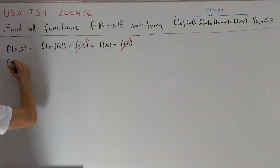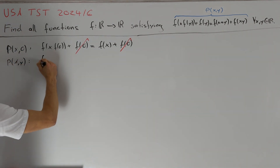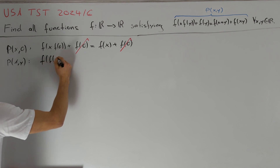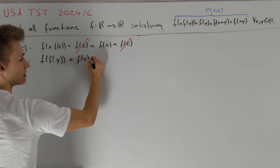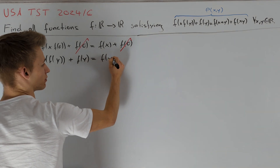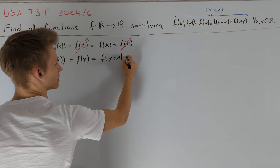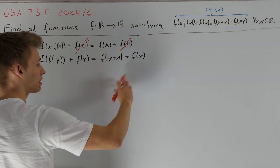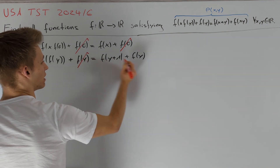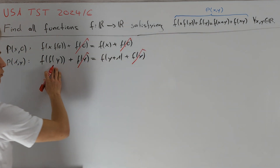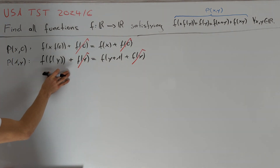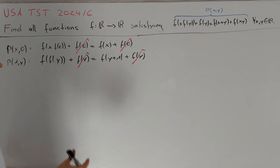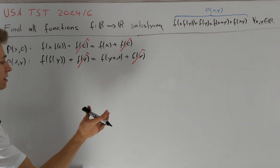Next we want to try P(1, y). Here we get f(f(y)) + f(y) = f(y+1) + f(y). We can subtract f(y) from both sides to get f(f(y)) = f(y) + 1. Right now these two equations are the only promising ones we can get by plugging in small values.